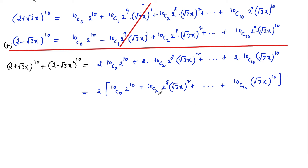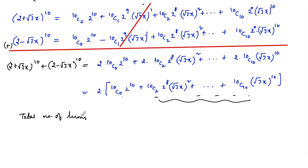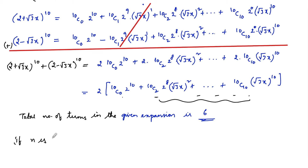Clearly we can find the number of terms: the even indices are 0, 2, 4, 6, 8, 10 — that is 6 terms. So the total number of terms in the expansion is 6.